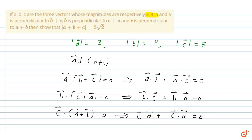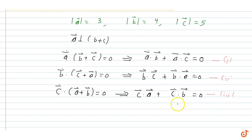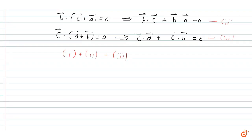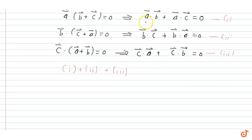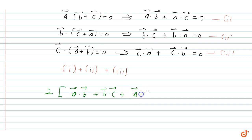Now we add all three equations together. Since A·B and B·A are the same in dot product, adding all three equations gives: 2(A·B) + 2(B·C) + 2(A·C) = 0, which means A·B + B·C + C·A = 0.